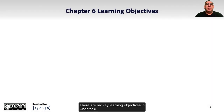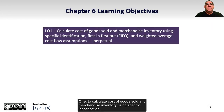There are six key learning objectives in Chapter 6. Learning Objective 1 is to calculate cost of goods sold and merchandise inventory using specific identification, first-in-first-out or FIFO, and weighted average cost flow assumptions under a perpetual inventory system.